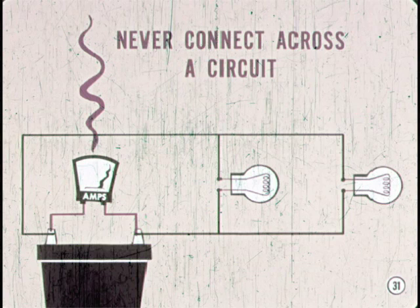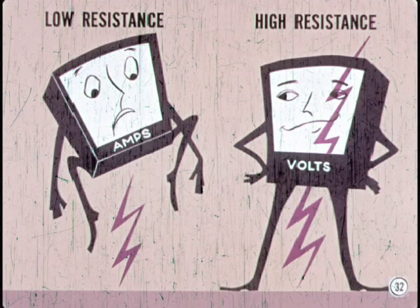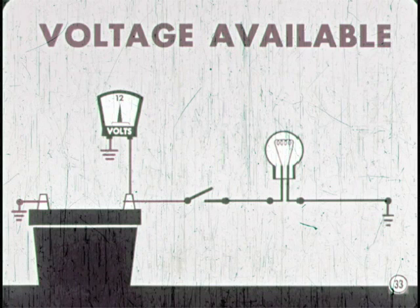Does that satisfy you, Tech? Yep. I'll keep quiet so you can get on to voltage and voltmeters. Unlike the low resistance ammeter, the voltmeter has high internal resistance. That's why it's not used or connected like an ammeter. To find the voltage available at any terminal in a circuit, connect the voltmeter from the terminal to ground. Here, the available voltage at the battery is 12 volts. But how about voltage at the switch and the lamp terminals?